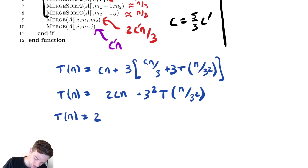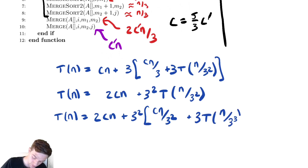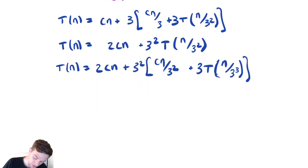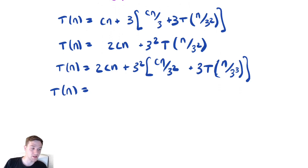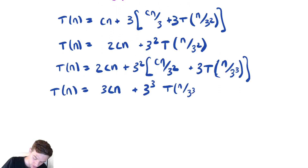T of n equals two cn plus three squared times cn over three squared, plus three times t of n over three squared over three, which is n over three cubed. Distributing the three squared, we get three cn when we group everything together, plus three cubed times t of n over three cubed.